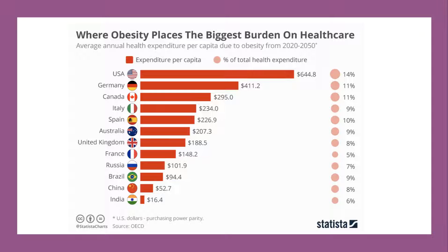Obesity clearly also places huge costs on healthcare systems. This is a chart showing average annual health spending per person per capita linked directly to obesity from 2020 to 2050. They're forecasting that there's going to be a huge increase in the cost of treating and mitigating the effects of obesity, taking up a sizeable percentage of healthcare spending in some countries, in particular Germany and the United States.